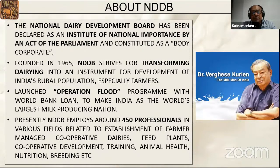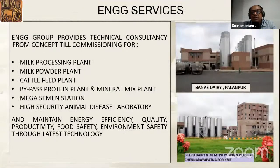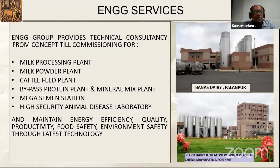NDDB employs 450 professionals in various fields — dairy and cattle feed plants, cooperative development, training, animal health and nutrition. The Engineering Services division provides consultancy from concept to commissioning. Projects executed include Banas Dairy, Chandraipatna Dairy, powder plants, cattle feed plants, bypass protein and mineral mix, mega semen stations, and high security animal disease laboratories. Our mission is to maintain energy efficiency, quality, productivity, food safety, and environmental safety through latest technology.